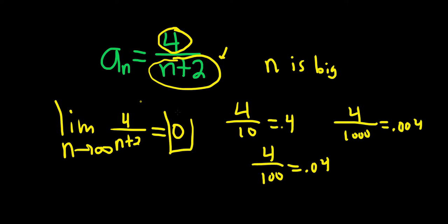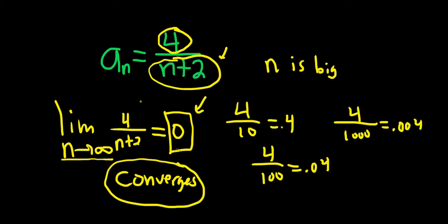So we say that the limit is equal to 0, and in this case, we'll say that the sequence actually converges. Remember, a sequence converges if when you take the limit as n goes to infinity, you get a number. If you don't get a number, then you say it diverges.